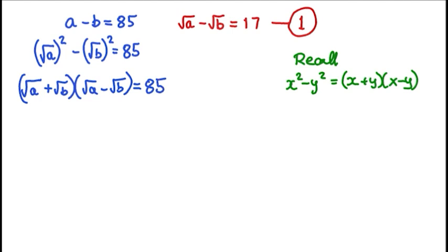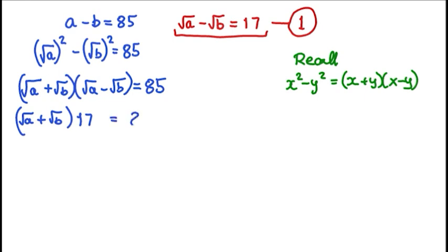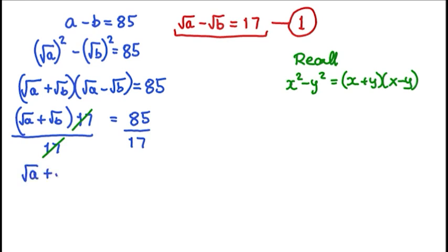Now, looking more closely, we can see that from equation 1 we can substitute back in and say that the square root of a plus the square root of b, multiplied by 17, is equal to 85. Let's simplify and divide both sides by 17: 17 into 17 goes one time, and we get the square root of a plus the square root of b is equal to 85 divided by 17, which is 5. Let's call this equation 2.